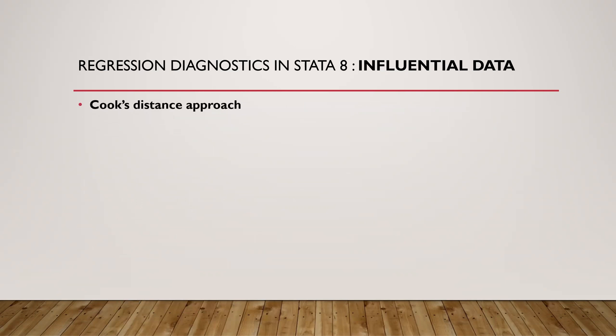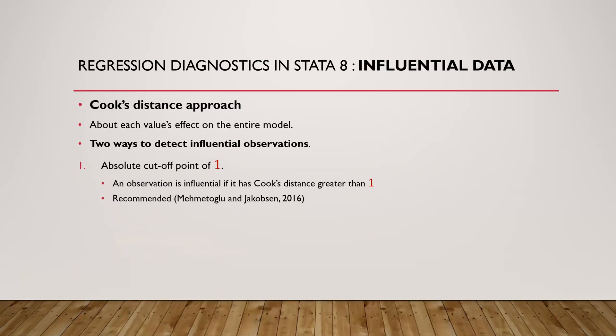The Cook's distance approach focuses on the entire model. We have two ways to check for influential observation in Stata. The first approach is to look at an absolute cutoff point of one. If we calculate the Cook's distance for each observation and the value is greater than one, then we can conclude that this observation is influential. This method is recommended by Mehmetoglu and Jacobsen.